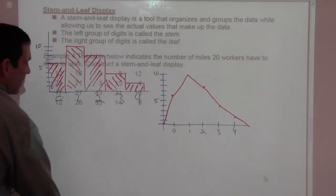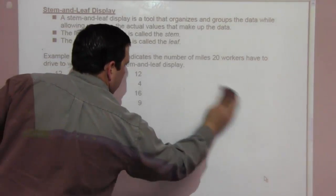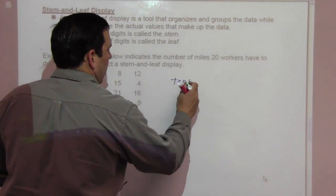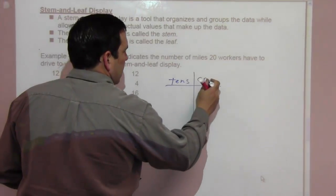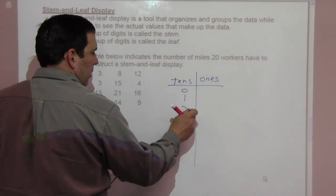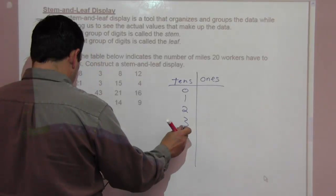Next one is a stem and leaf display. Stem and leaf display is a tool that organizes and groups the data while allowing us to see the actual values that make up the data. The left group of digits is called the stem, and the right group is the leaf. So the table below indicates the number of miles twenty workers have to drive to work. Construct a stem and leaf display. We're going to have the tens column and the ones. We have people who are less than 10 miles, so zero there. Then 10 to 20, 20 to 30, 30 to 40, and 40 to 50.